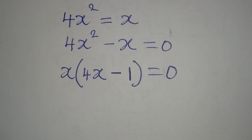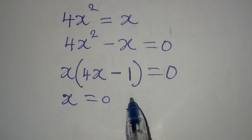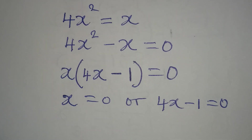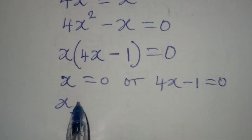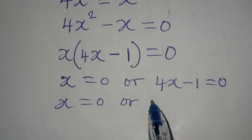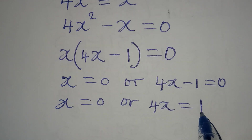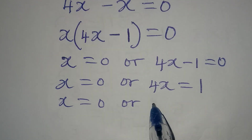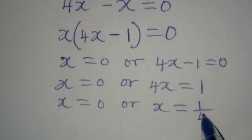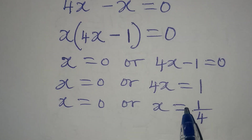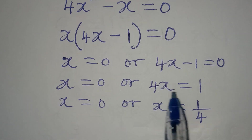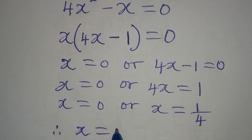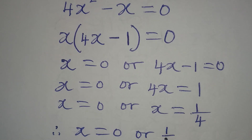We apply the zero product rule, which says it is either x equals 0, or 4x minus 1 equals 0. So x remains 0, or on the other side, 4x equals 1. Dividing both sides by the coefficient of x gives us 1 over 4. Therefore x equals 0 or 1 over 4.